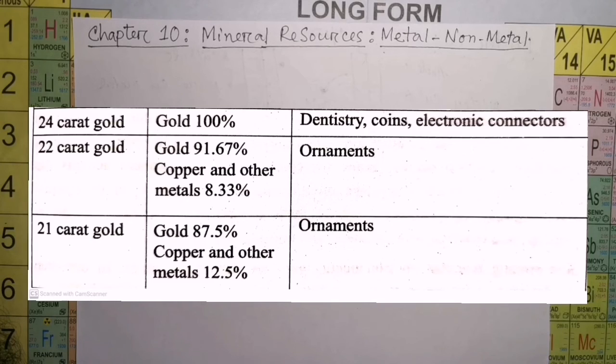With 24 karat, it will be pure gold. With 22 karat, gold is 91.67%, copper and other metals make up the rest. 21 karat is 87.5% gold, and copper and other metals are 12.5%. 22 karat is the standard. I have not mentioned the gold rate, so I don't think it's just the government's answer.